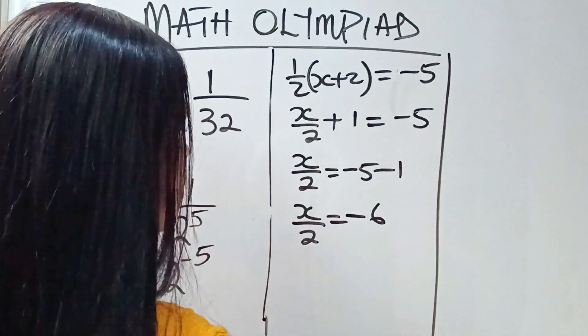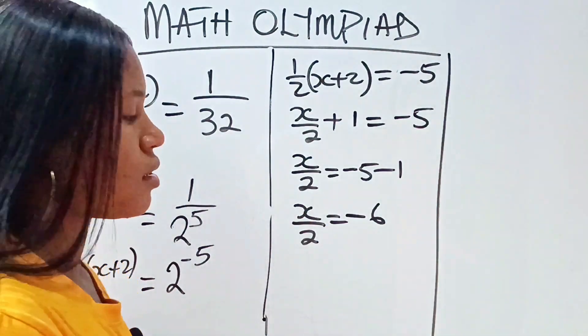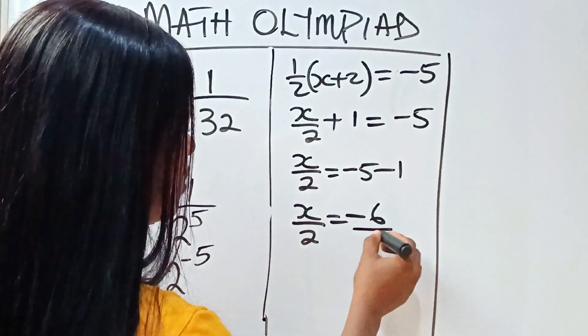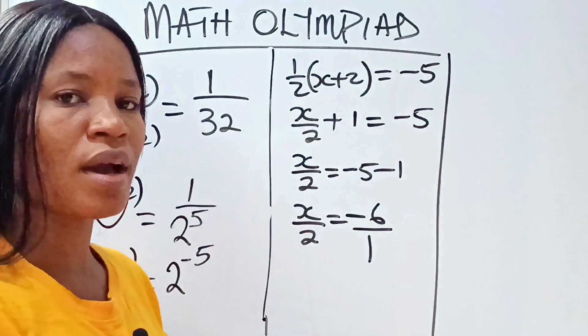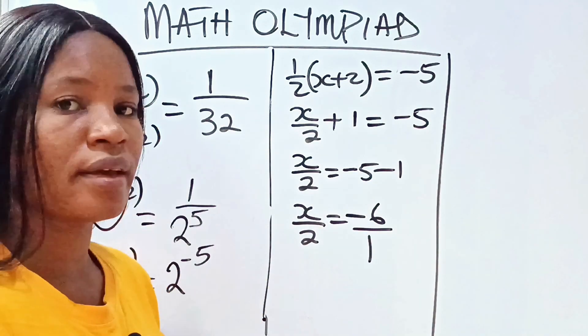Remember that what we are looking for is the value of x. At this point, you know that this is the same thing as minus 6 over 1. We have not really changed anything.